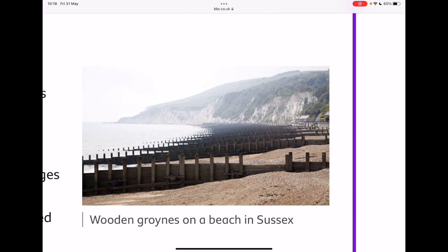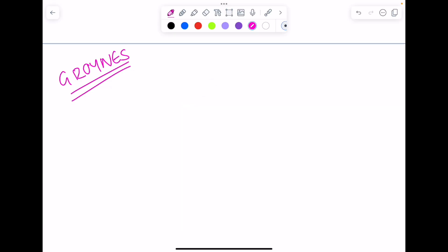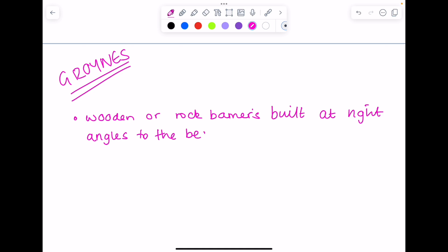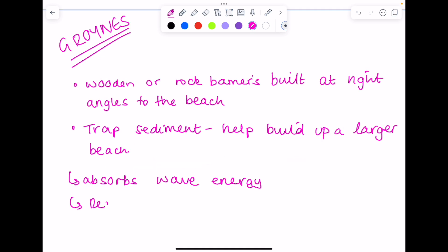We can see very clearly pictures of wooden groins. These are barriers built at right angles to the beach, and you can see how they trap sediment between them, which helps build up a larger beach which can absorb wave energy and therefore reduce erosion. So obviously the good thing about groins is they're highly effective at absorbing wave energy.